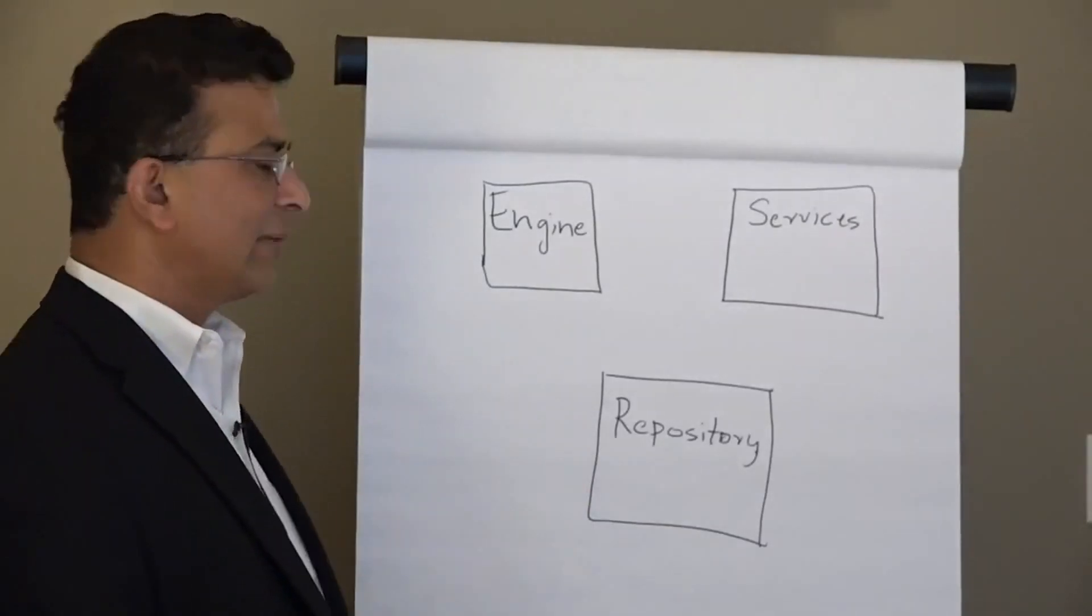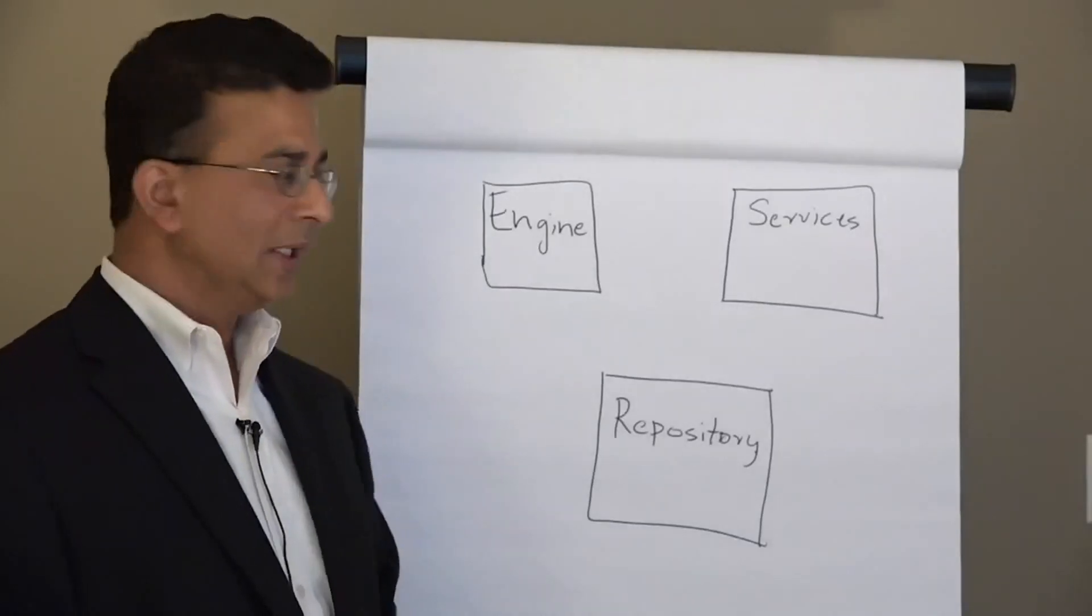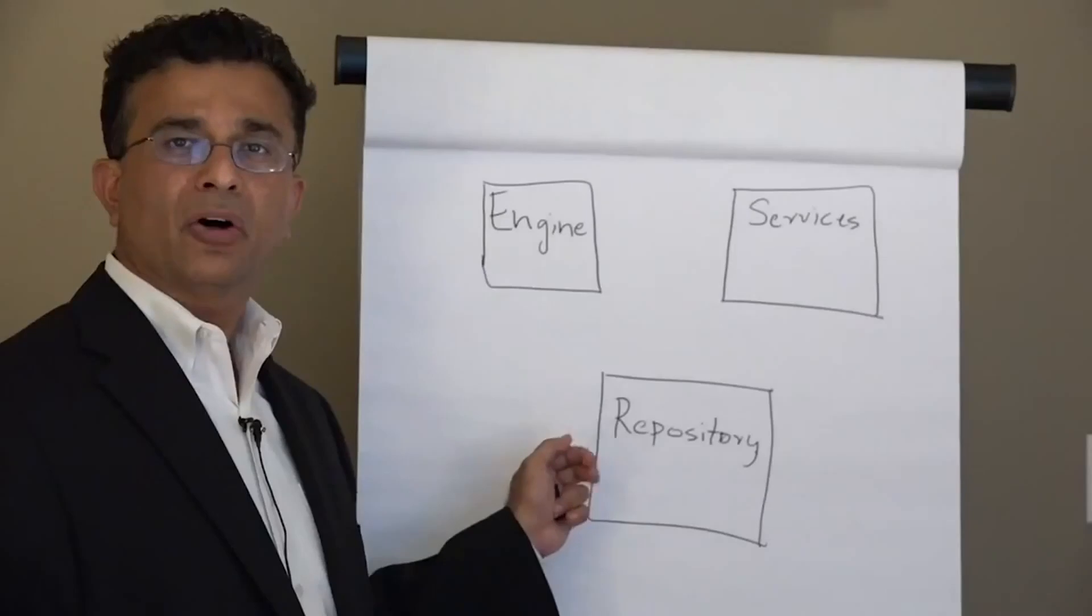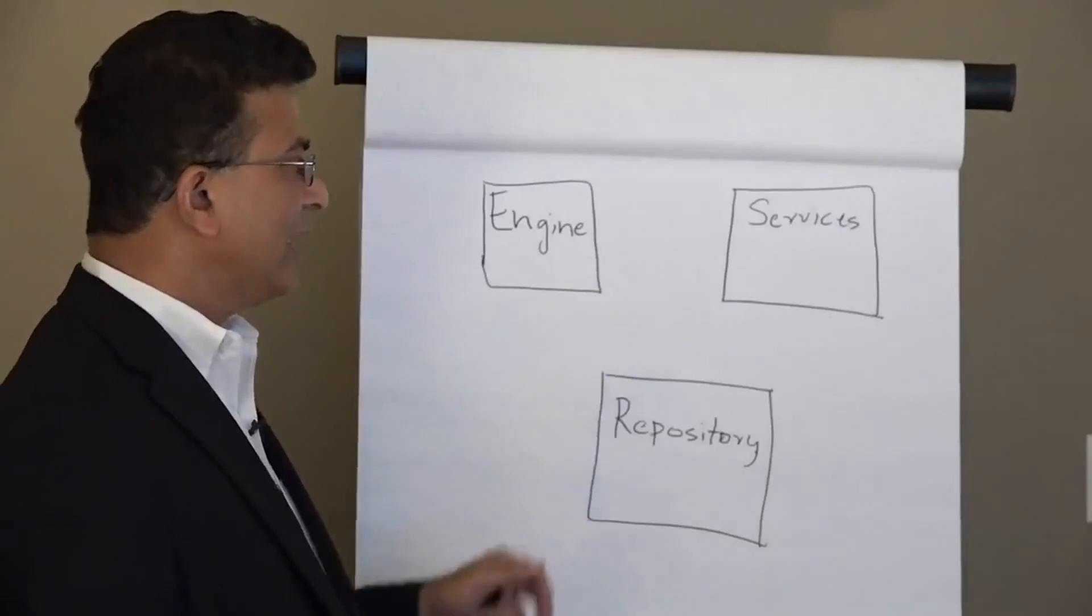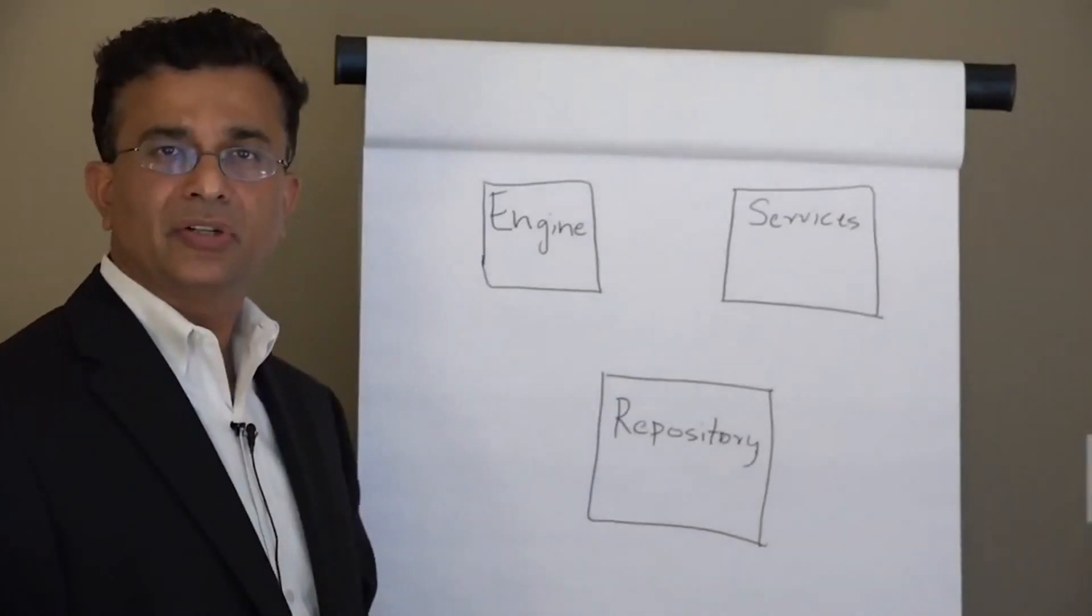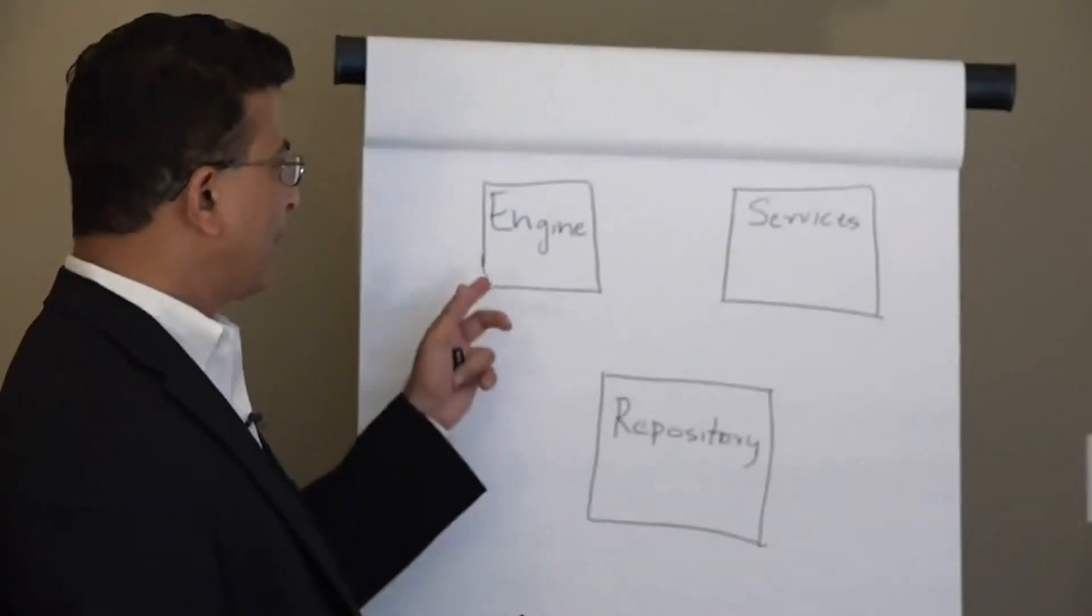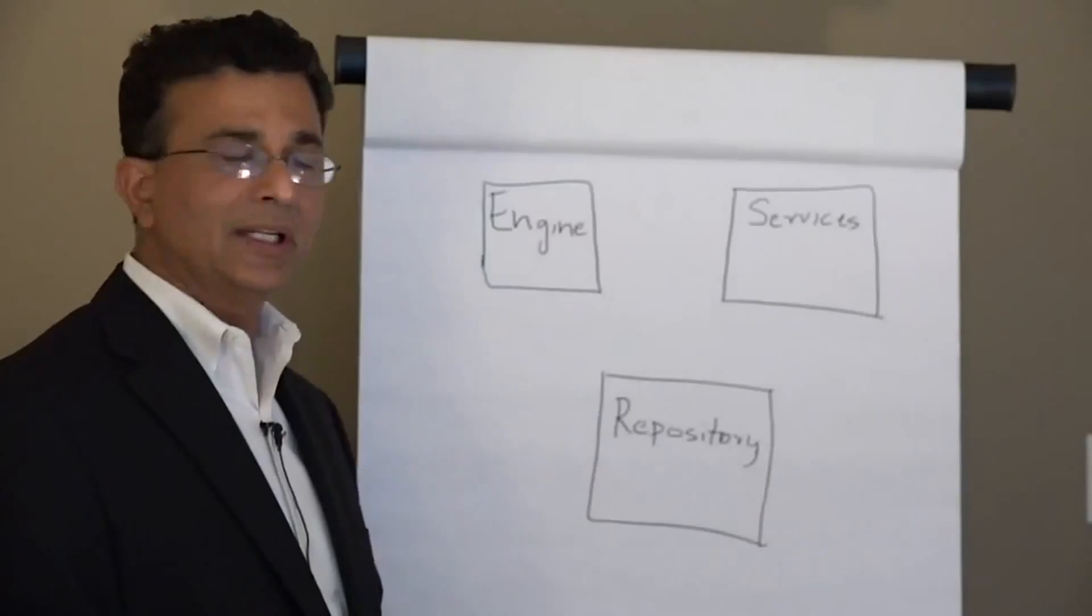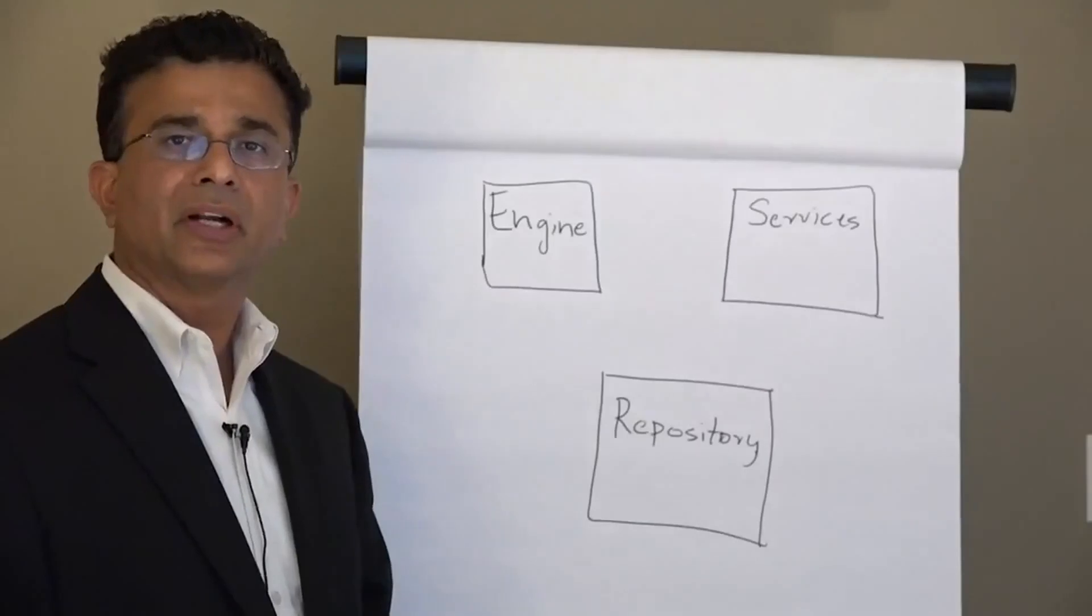The third one is the repository. This is also known as a metadata repository. It could be DB2 by default. It could be Oracle. It could be SQL Server. And all of them could be on the same machine or on different machines. Or you could have different combinations. For example, engine and services could be on one machine, the repository could be on a different machine. Services and repository could be on one machine. There are multiple different configurations.